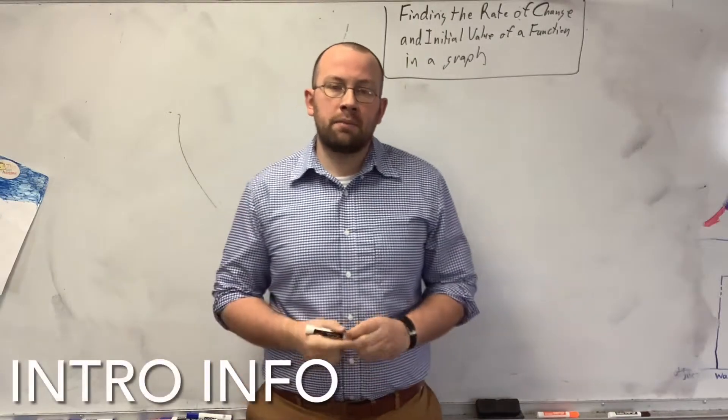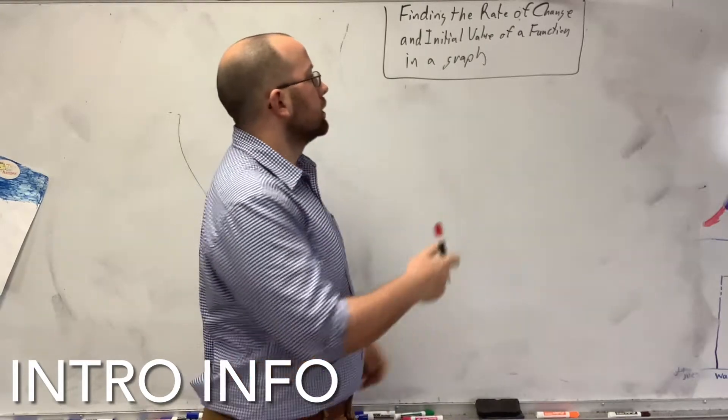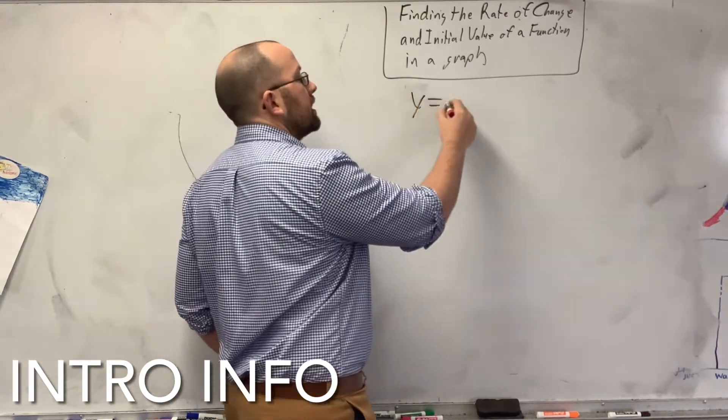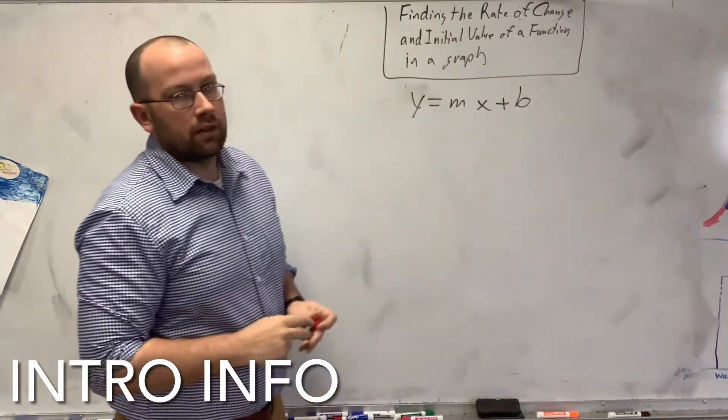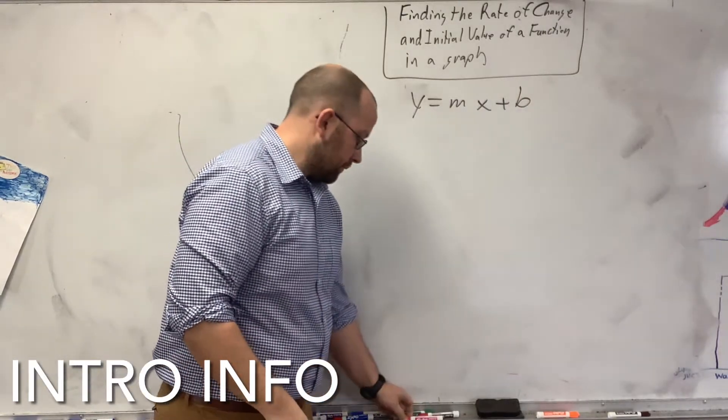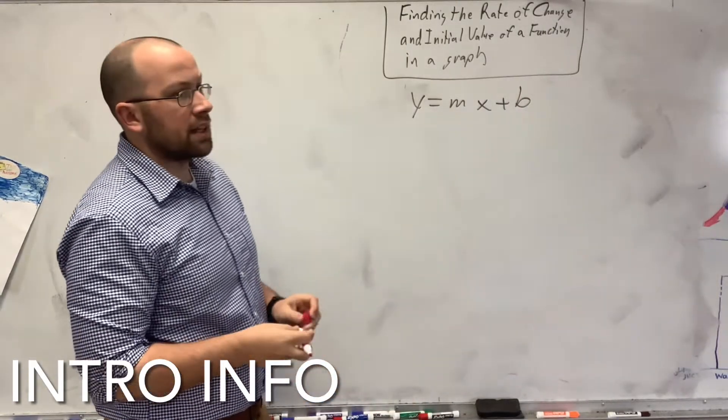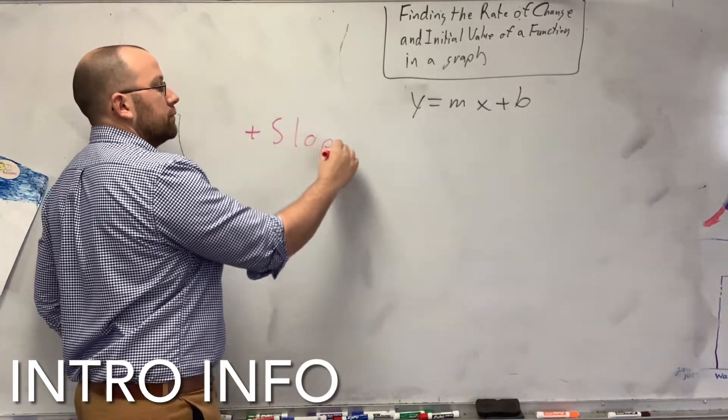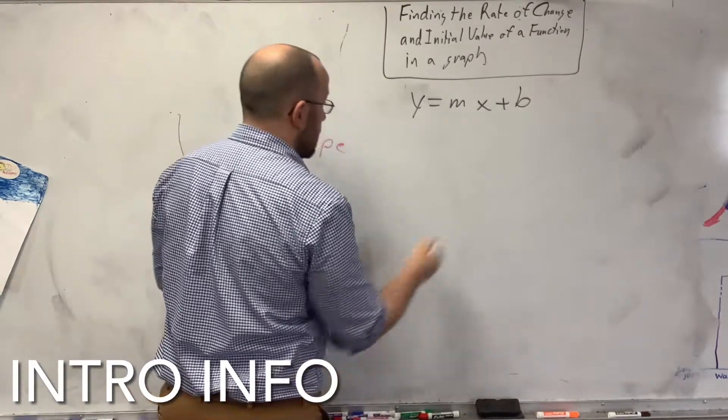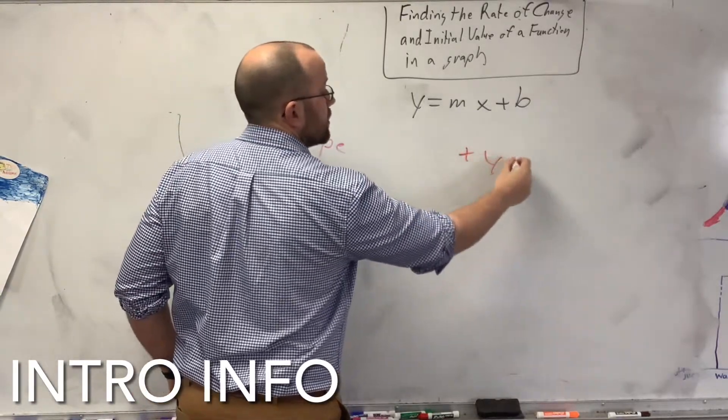The function we are talking about is slope-intercept form. So, y equals mx plus b. In this form, you have two distinct things: you have the slope, and you have the y-intercept.